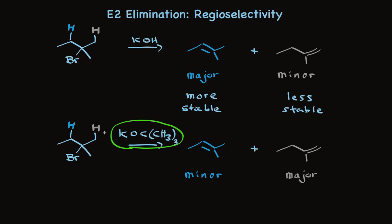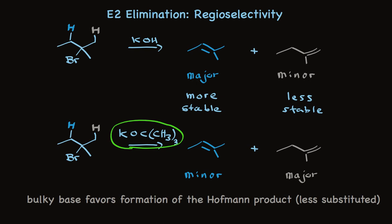The stability of the product is no longer the key factor. This is a general phenomenon. The use of a bulky base favors formation of the Hofmann product, less substituted. This less substituted product is called the Hofmann product because it's the favored product of a reaction called the Hofmann elimination.